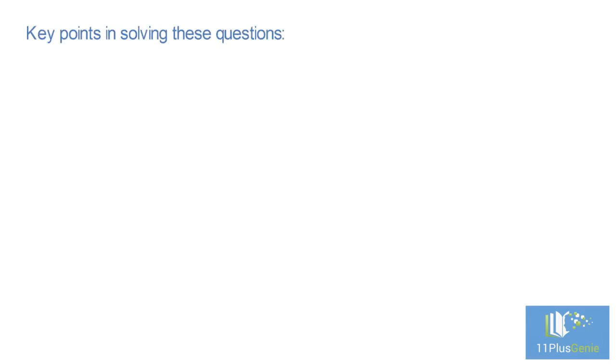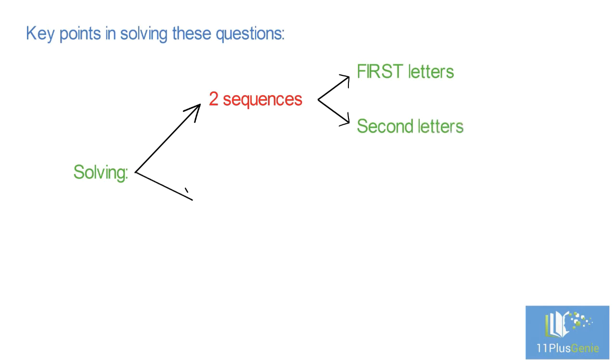Key Points in Solving These Questions: There are two sets of sequences to identify. The first letters of each pair make up one sequence, and the second letters of each pair make up a second sequence.